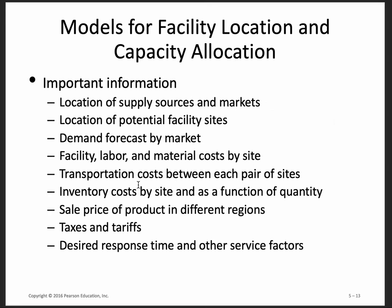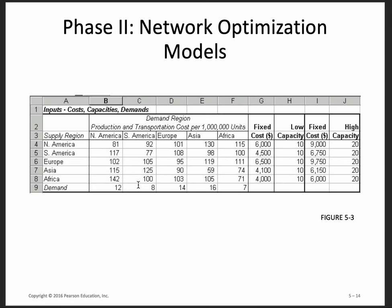Important information to keep track of includes your supply sources, demand sources, potential facility sites, demand in different markets, and costs — everything from facility, labor, transportation, and inventory costs to sales price, taxes, and tariffs. You also need to consider desired response time and other service factors. All of these things impact the location of the facility and the capacity you can allocate. So the first step in network design is figuring out where your supply and demand locations are and how you're going to connect them using network optimization models.